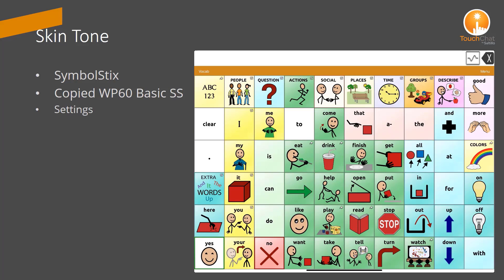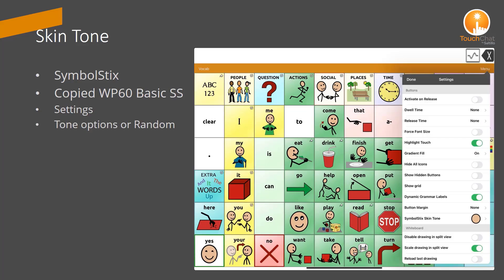In the Settings menu, scroll to Buttons. If you are working with a copied file, you will see the option for Symbol Sticks skin tone.